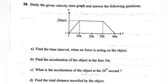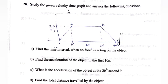Question 28: Study the given velocity-time graph and answer the following questions. Part a: Find the time interval when no force is acting on the object. Answer: Between points A and B, the object is in uniform motion, that is from 10 seconds to 30 seconds, no force is acting on it.